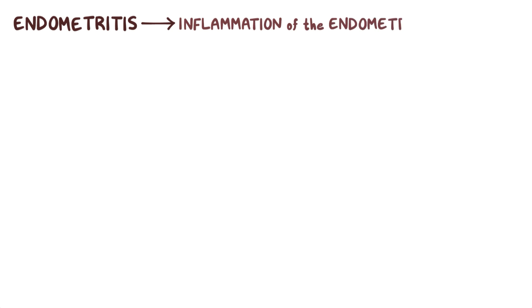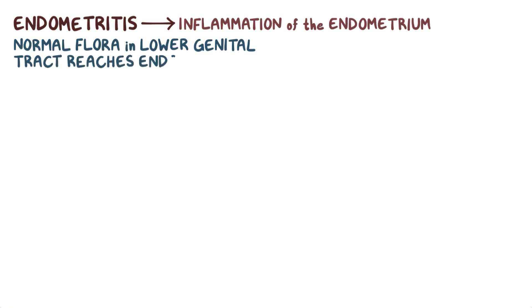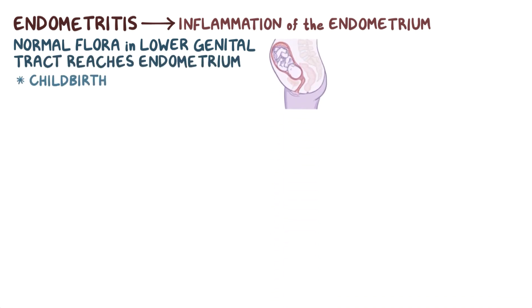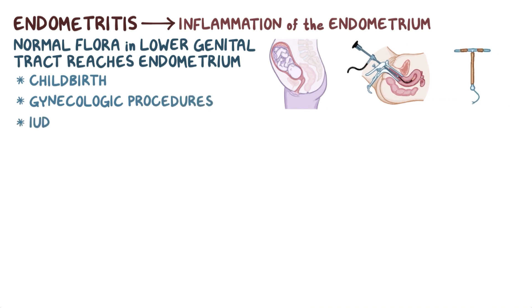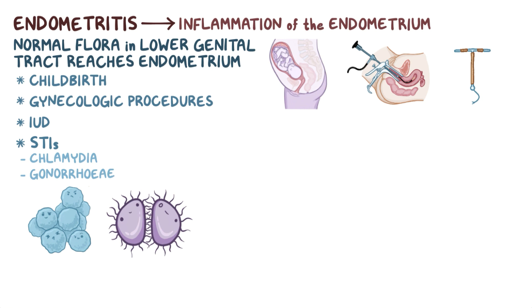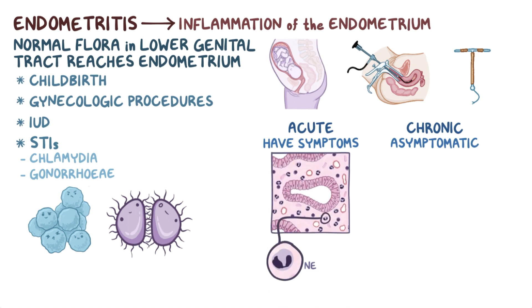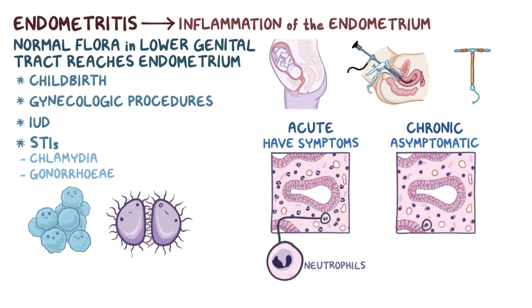As a quick recap: endometritis refers to the inflammation of the endometrium. It is usually caused when normal flora in the lower genital tract reaches the endometrium. This can happen during childbirth, gynecologic procedures, and the presence of an intrauterine contraceptive device. Other cases of endometritis are due to sexually transmitted infections like Chlamydia trachomatis and Neisseria gonorrhoeae. Endometritis can be acute or chronic. People with acute endometritis are more likely to have symptoms, whereas many of those with chronic endometritis are asymptomatic. On histology, acute endometritis has neutrophils in the endometrium, while in chronic endometritis, the presence of plasma cells in the endometrium is diagnostic.